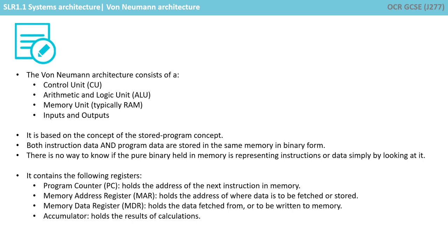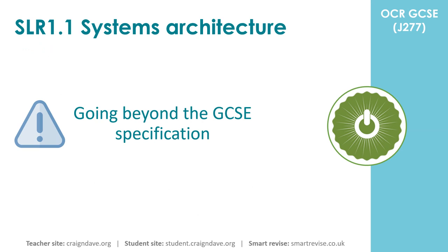The von Neumann architecture consists of a control unit, an arithmetic logic unit, memory unit and inputs and outputs. It is based on the stored program concept. Both instructions and program data are stored in the same memory in binary form. There is no way to know if the pure binary held in memory is representing instructions or data simply by looking at it — it has to be brought into the processor and decoded. It contains the following registers: the program counter, holding the address of the next instruction to be executed; the memory address register, holding the address of where data is to be fetched or stored; the memory data register, holding the data fetched from or to be written to memory; and the accumulator, holding the result of calculations.